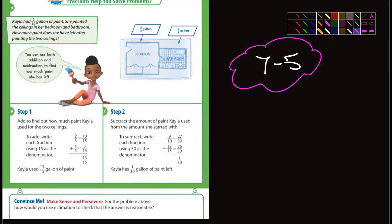Okay fifth graders, here we are starting 7-5 and 7-5 is adding and subtracting fractions. In this example, it says Kayla had nine-tenths of a gallon of paint and she painted the ceilings in her bedroom and her bathroom. How much paint does she have after she painted the two ceilings?